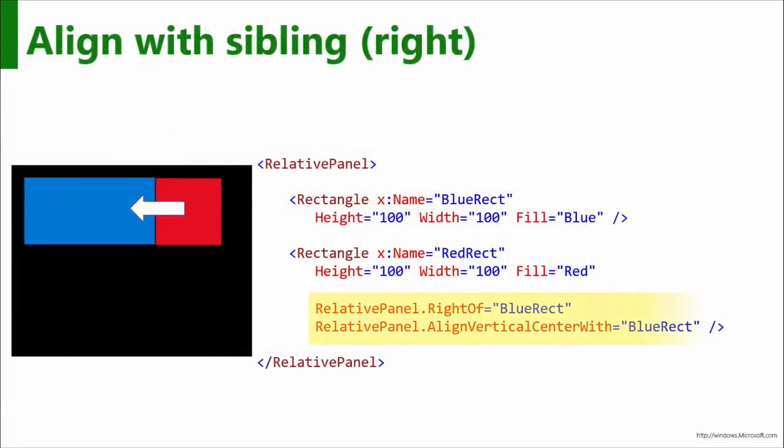Now for aligning with a sibling — I have the blue and red rectangle together, and I want to put the red over to the right. So I can say RelativePanel dot RightOf, and it's right of the blue rectangle. Wherever that blue rectangle moves to, the red rectangle will follow, because it's not positioned based on the panel — it's positioned based on the blue rectangle. I can also align it vertically to make sure it's centered, at the bottom, top, or centered, whichever I want.